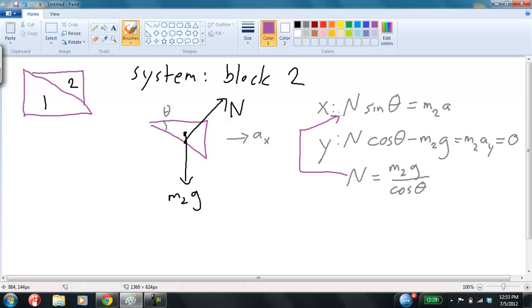Okay. Now, I can plug back into here, and I can say m2a equals N sine theta, and the result of that is going to be that a equals m2g times sine theta, and I have to put the m2g over cosine. And this is m2a, so the m2s cancel out,